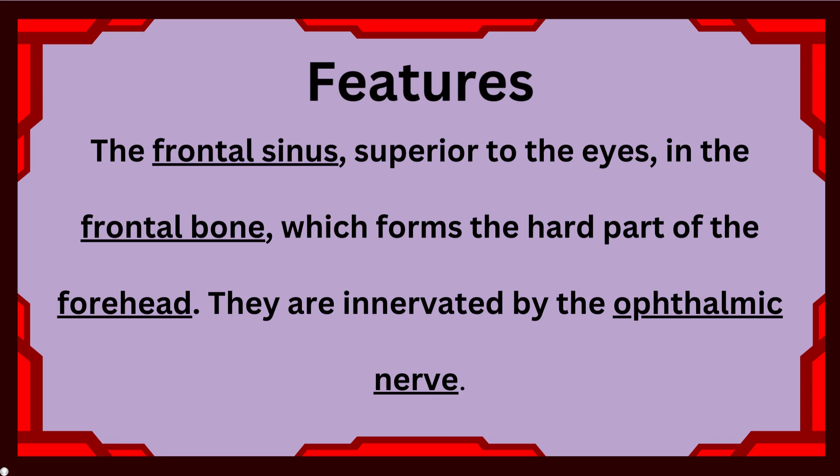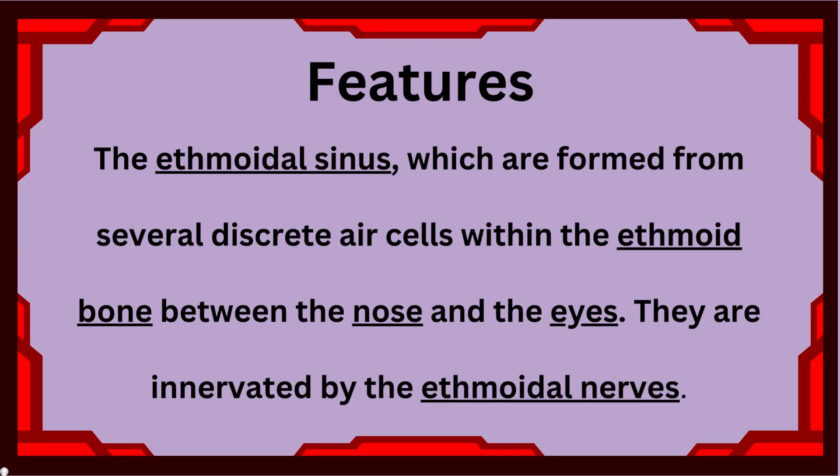The ethmoidal sinus is formed from several discrete air cells within the ethmoidal bone, located between your nose and your eyes. They are innervated by the ethmoidal nerves.